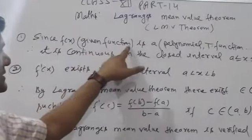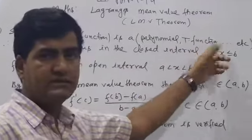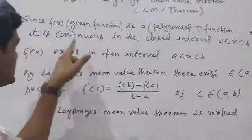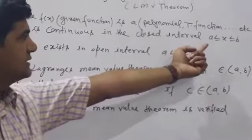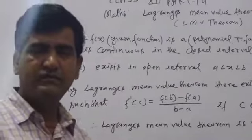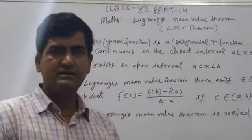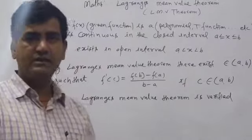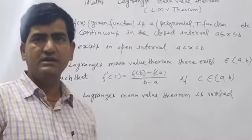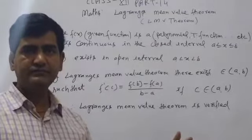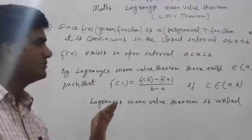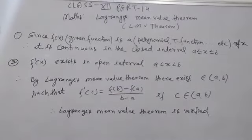Since f(x) — the given function — is either a polynomial, trigonometric, exponential, or any other type of function, we say f(x) is continuous in the closed interval a ≤ x ≤ b. In both theorems — Rolle's and Lagrange Mean Value Theorem — the first condition is: if the given function is polynomial (algebraic), exponential, trigonometric, or a combination such as cosine, sine, constants, e^x, a^x — all these types are continuous. Therefore, the given function is continuous in the closed interval a ≤ x ≤ b.